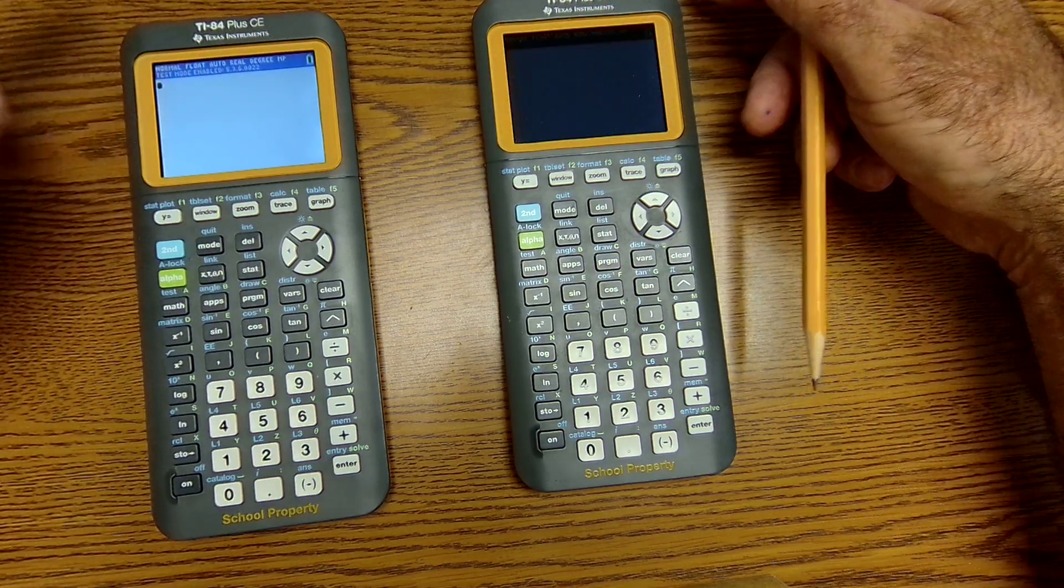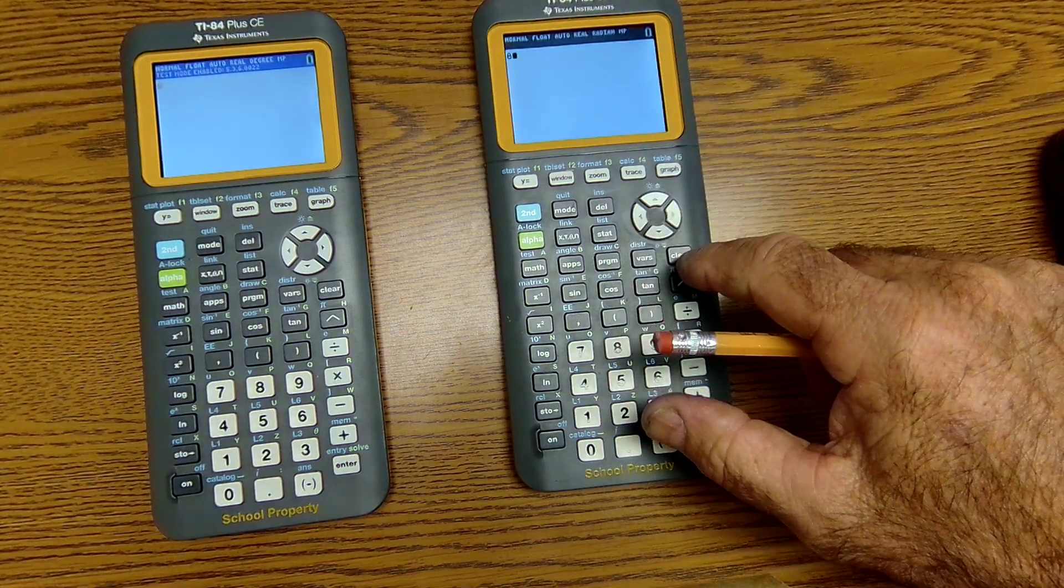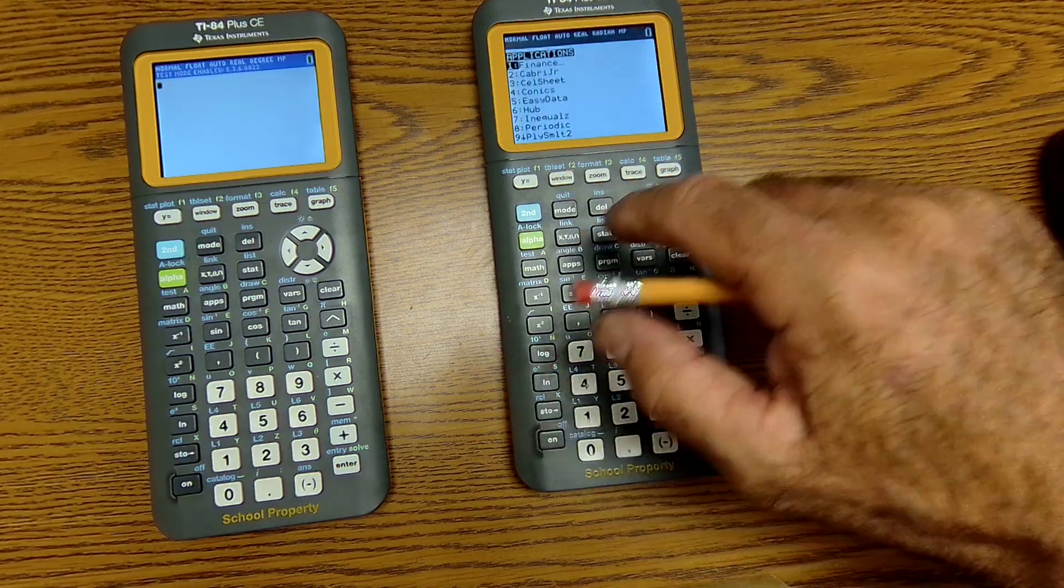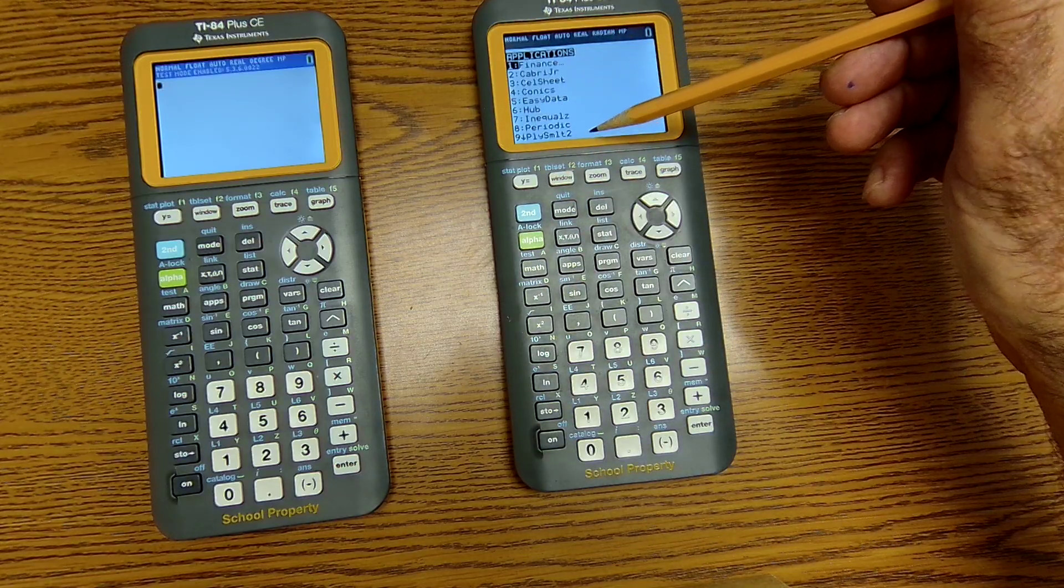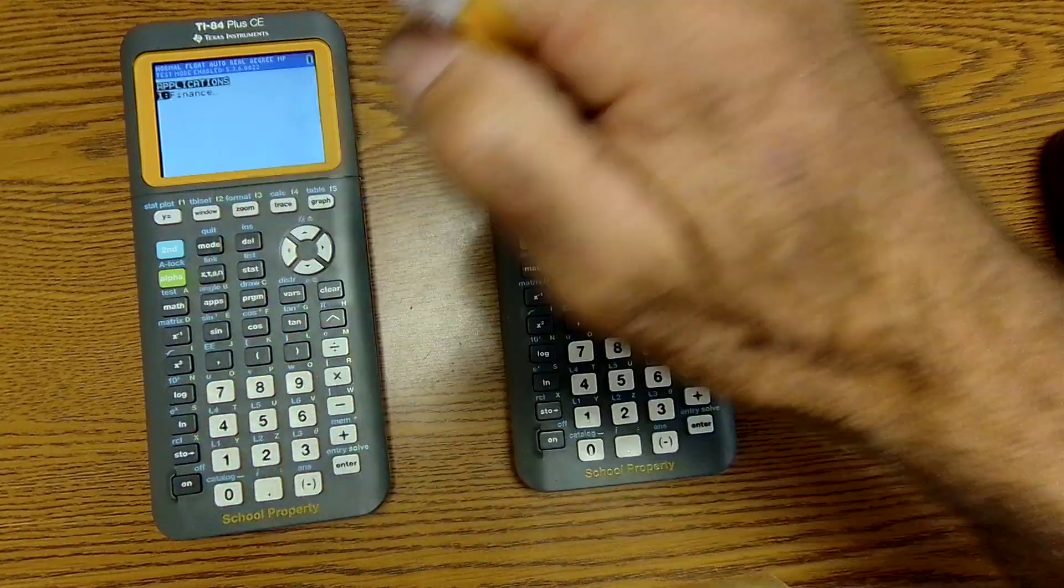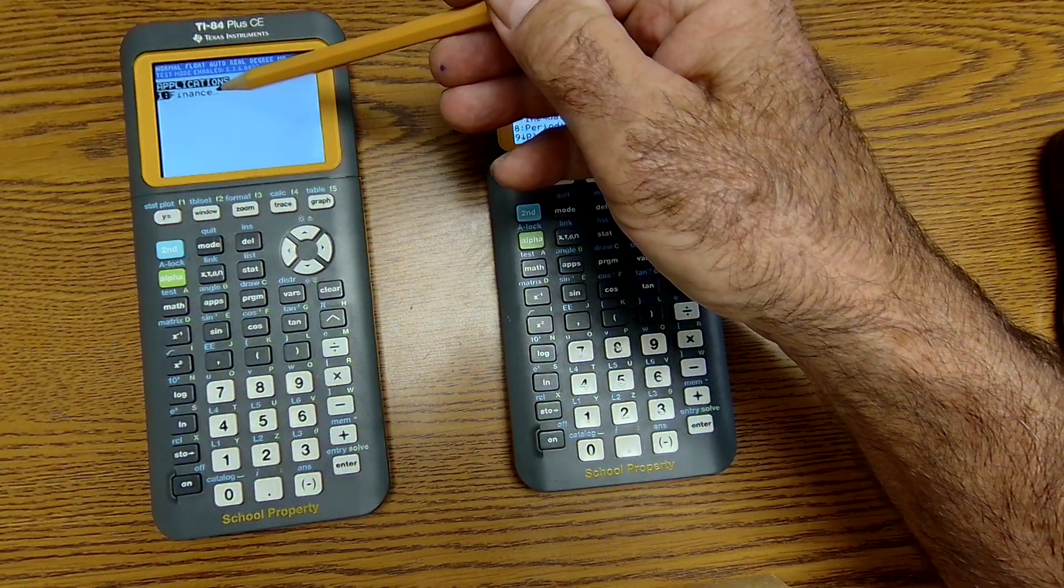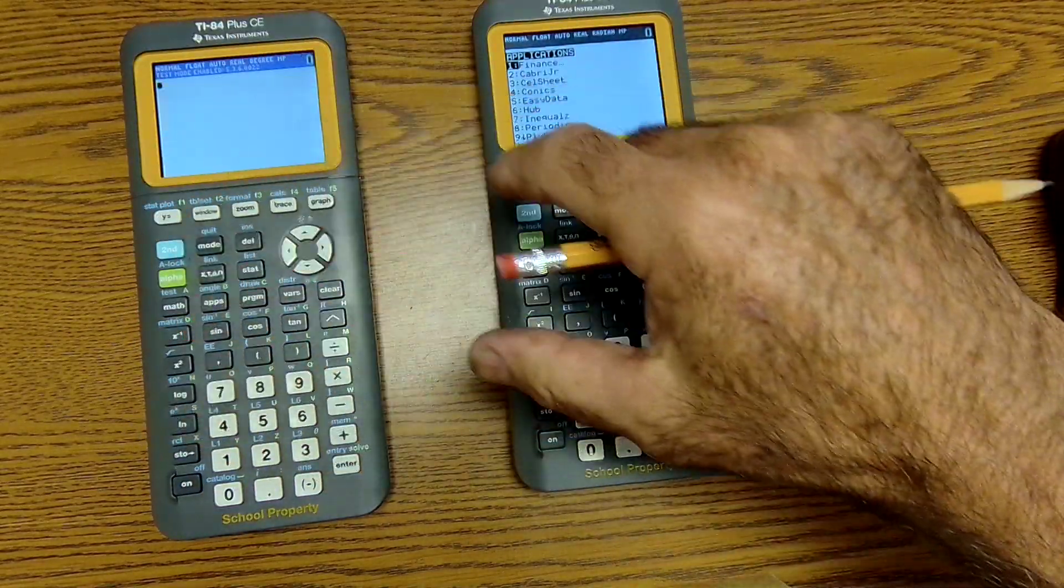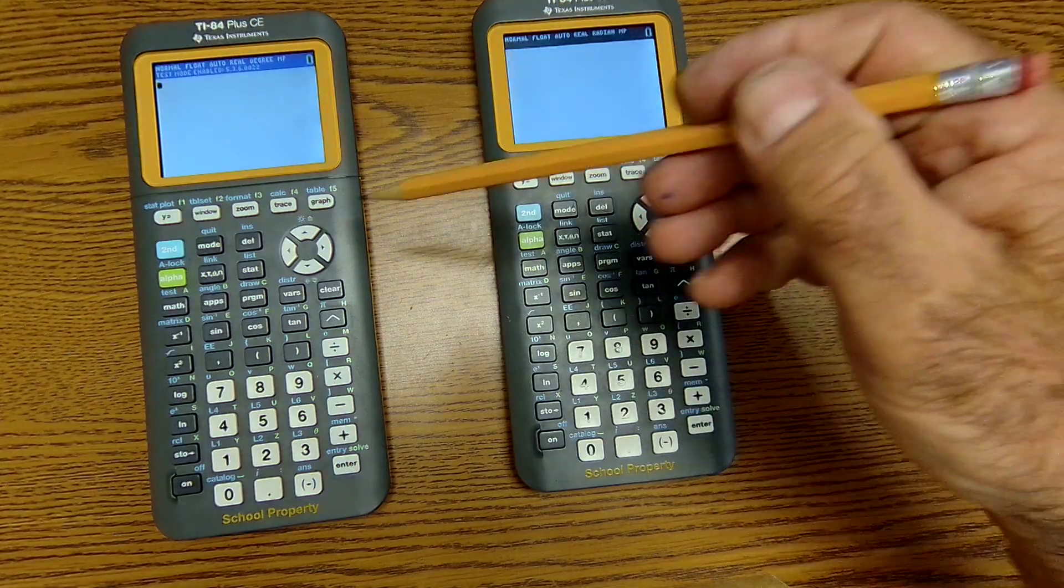So some of the things you could do outside of test mode is you could go to the apps. All your apps are available. But in test mode, only the finance app is available.